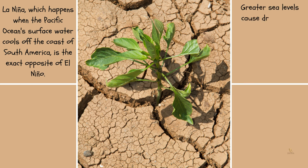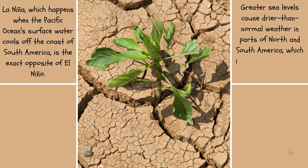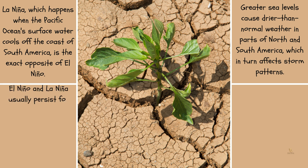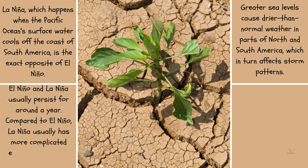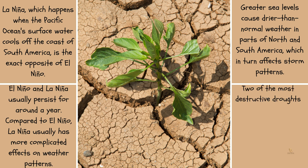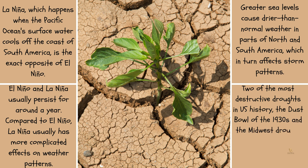Greater sea levels cause drier-than-normal weather in parts of North and South America, which in turn affect storm patterns. El Niño and La Niña usually persist for around a year. Compared to El Niño, La Niña usually has more complicated effects on weather patterns. Two of the most destructive droughts in U.S. history — the Dust Bowl of the 1930s and the Midwest Drought of 1988 — have been connected to the impacts of La Niña.